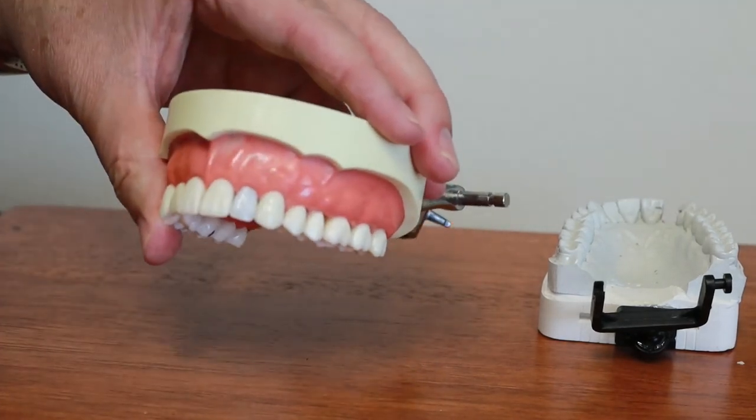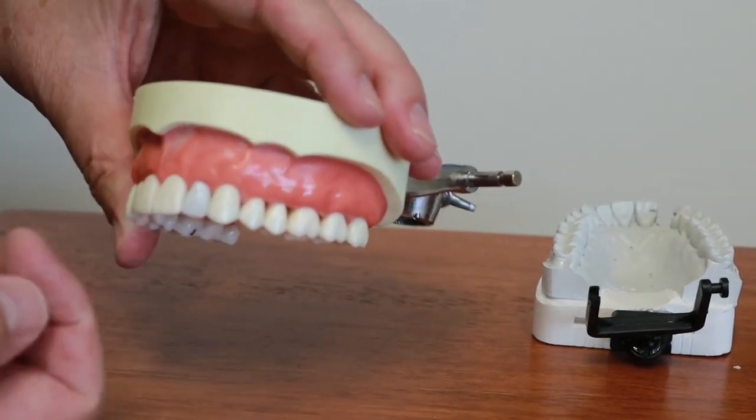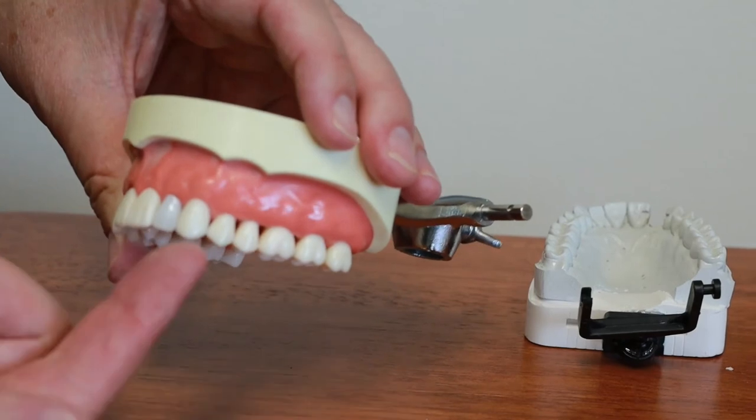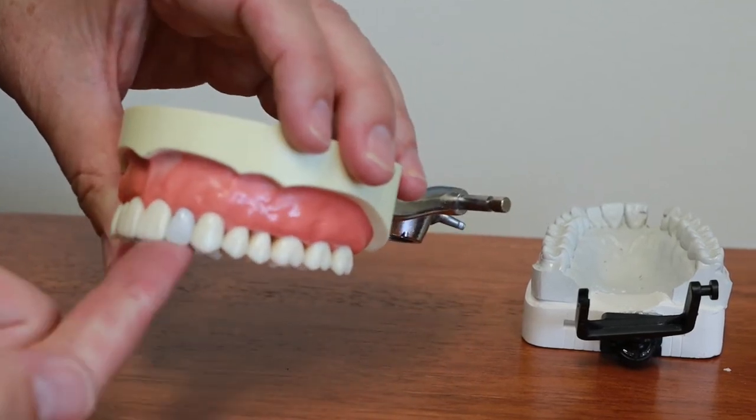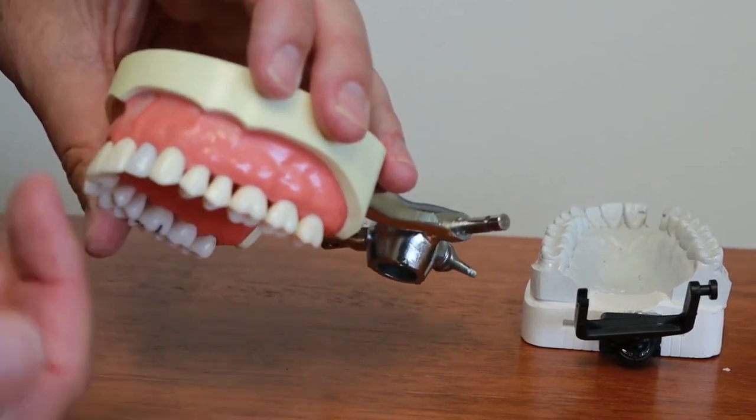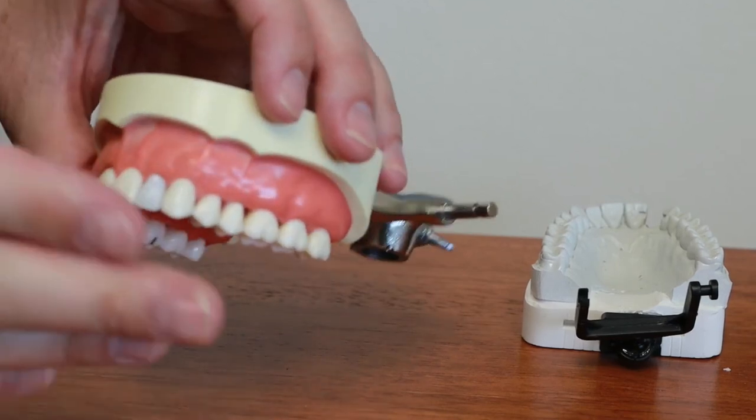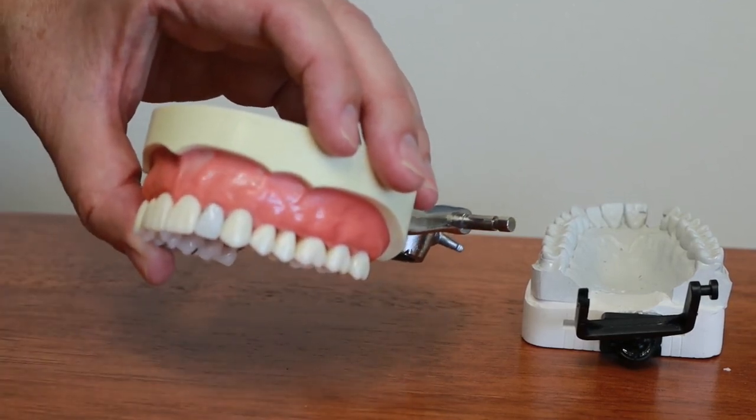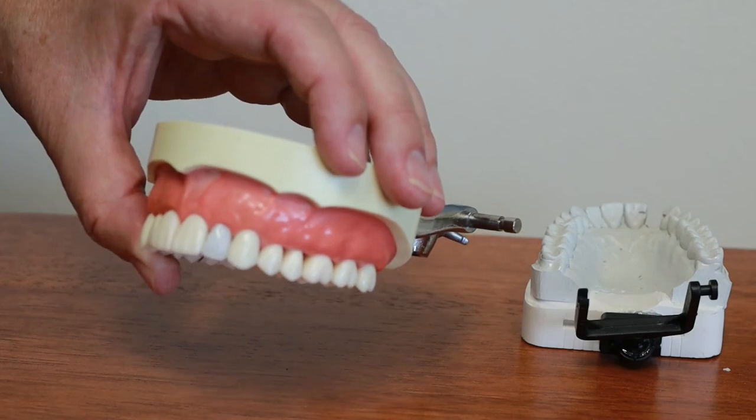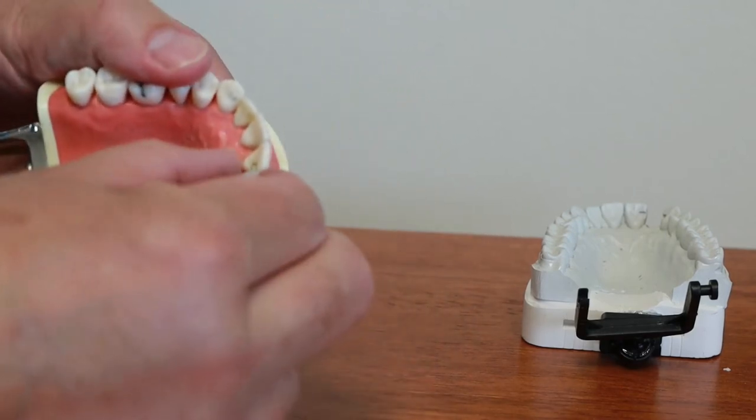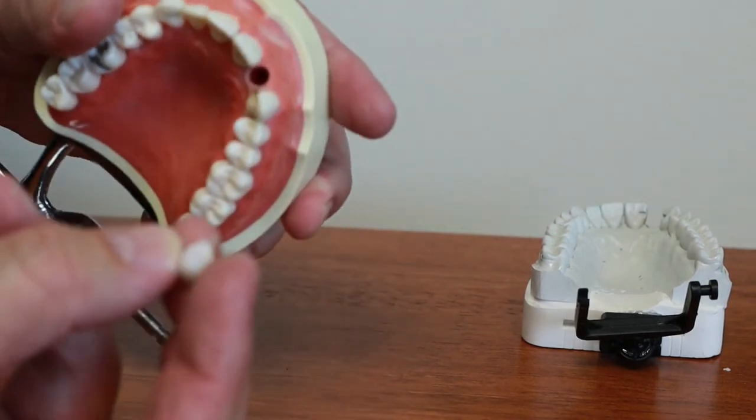At this point in time I'll give the patient a mirror. I'll set the patient up, give them a mirror, have them double check, make sure we pick the right color. They like the shape, they like how everything looks. Because if you need to change anything now's the time to do it. Once the patient gives us the go-ahead that's all good, now we're ready to bond.